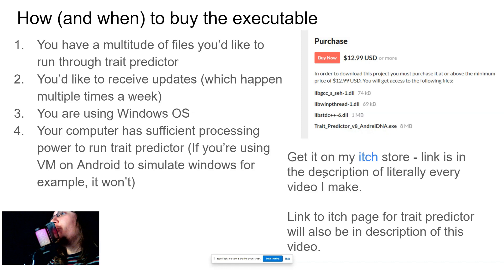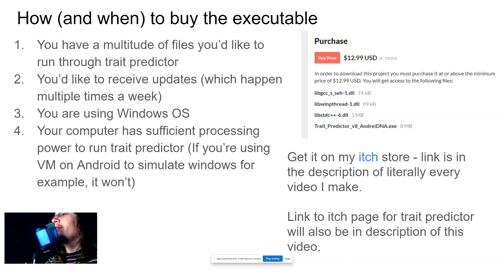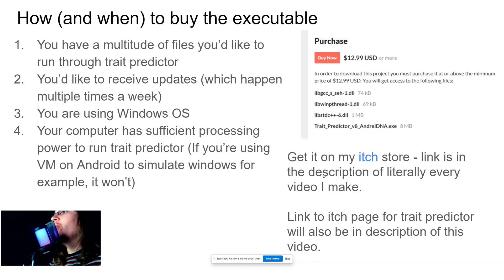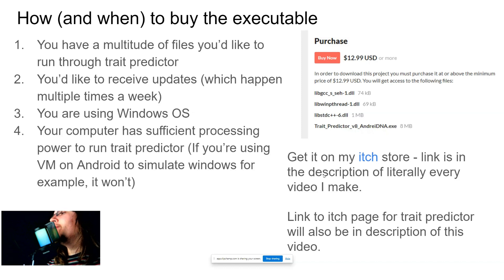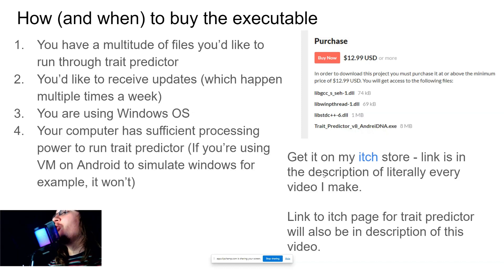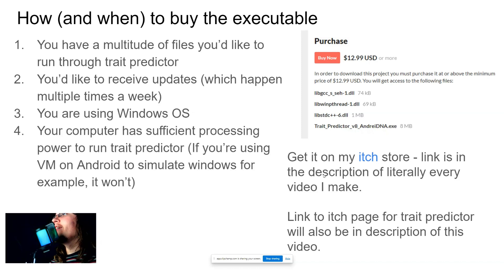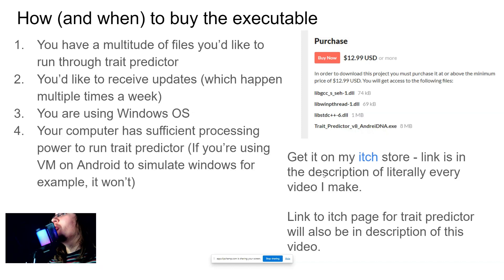Or if you don't have a computer — if you're an Android or iPhone user — in that case you should also buy the report. To get the Trade Predictor executable, you can get it on my itch store, and the link to this itch store is in literally every single video that I make. The link to the itch page for Trade Predictor will also be in the description of this video, so you can access it from there.